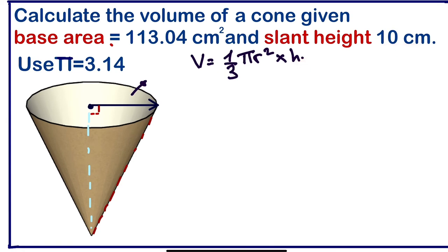We have a slant height of 10 centimeters. In order for us to calculate the radius, we are going to use this formula. As I earlier said, base area equals πr².